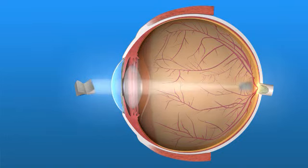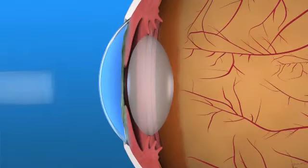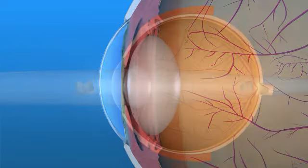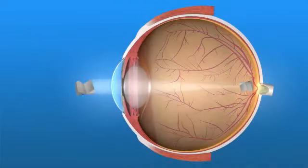Presbyopia develops when our eye's natural lens loses its flexibility. Focusing up close becomes more difficult. The eye's ciliary muscle contracts, which causes our flexible lens to thicken or change shape. This change in shape allows us to see objects up close.